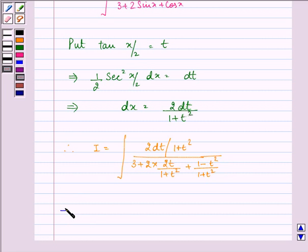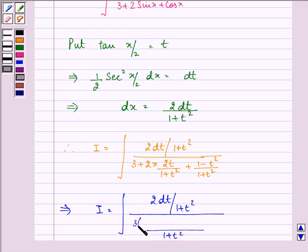So now let us solve it further we have I equal to integral 2 dt upon 1 plus t square upon taking 1 plus t square common we have 3 into 1 plus t square plus 4t plus 1 minus t square.